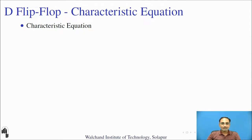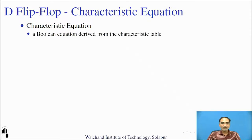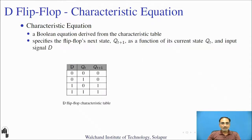Now let us derive the characteristic equation of the D flip-flop. The characteristic equation is a Boolean expression derived from the characteristic table. This expression specifies the flip-flop's next state Q(T+1) as a function of its current state Q(T) and input signal D. Here Q(T+1) is listed as a function of D and Q(T), where D is the input and Q(T) is the present state.